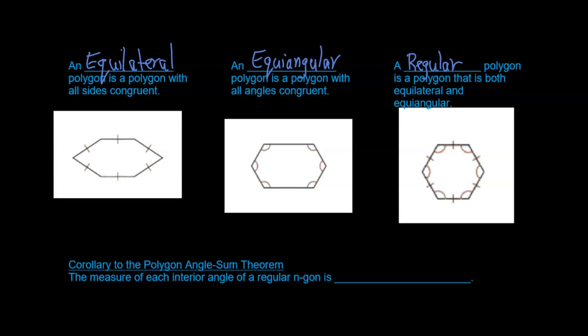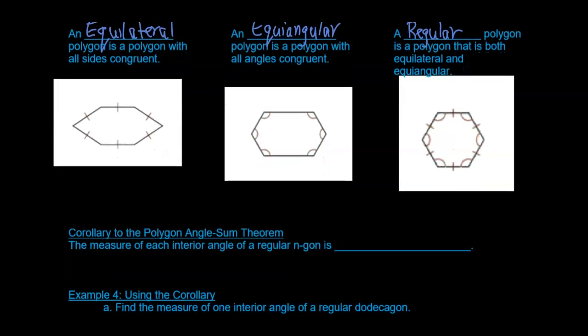That brings us to the corollary of the polygon angle sum theorem, which says: the measure of each interior angle of a regular n-gon is (n minus 2) times 180 divided by n. So you take the total degrees and divide by the number of sides, and that will give you the angle measure.